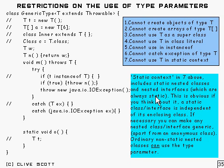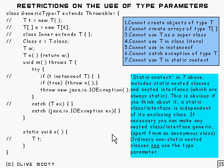Static context also includes static nested classes and nested interfaces, which are always static. If you think about it, it's obvious — a static class or interface is independent of the enclosing class. You can lift it out completely independently. So it's got no relationship to the enclosing type, and you can instantiate it without ever having to instantiate the enclosing type. It's got no business using that type parameter.